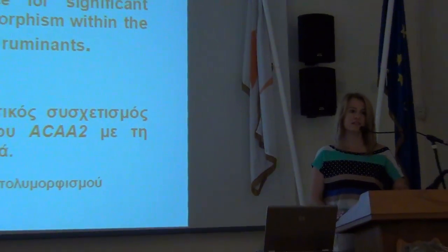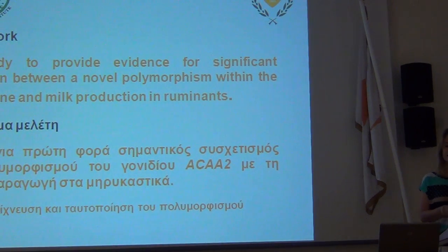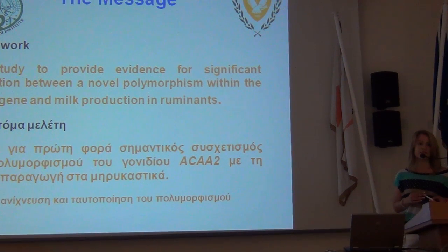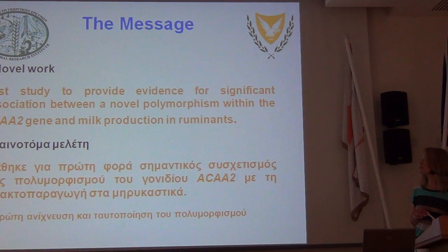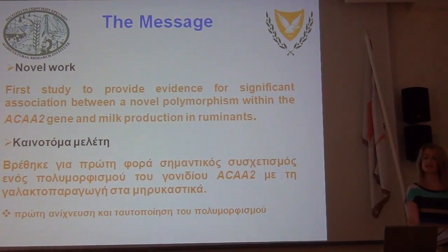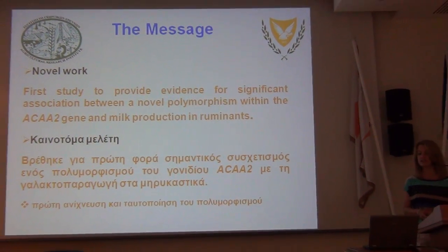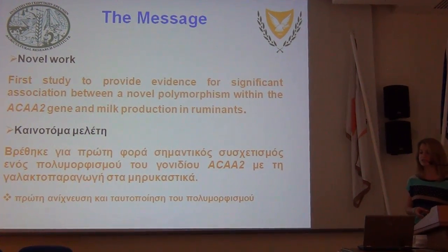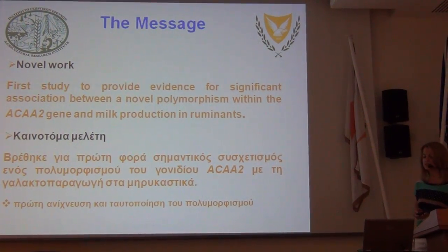I'll start with the take-home message from this work, and luckily it has been repeated already by Dr. Miltiades and Dr. Orford. We provide results from a novel work. This is the first study to provide evidence for a significant association between a novel polymorphism, identified for the first time within the ACAA2 gene, and milk production traits in ruminants — not just sheep, but ruminants in general. This has not been studied before, not even in cattle, as Dr. Miltiades already pointed out.